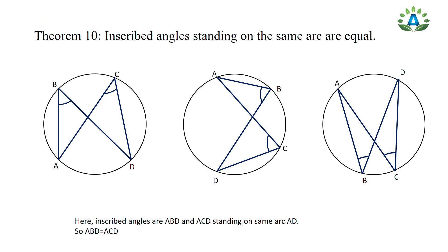Theorem 10 states that inscribed angles standing on the same arc are equal. In the figure, arc AD has two inscribed angles standing on it: angle ABD and angle ACD. These two angles are equal.